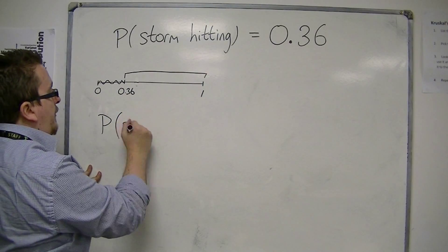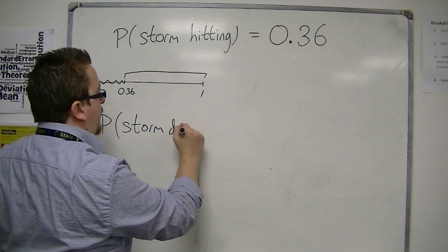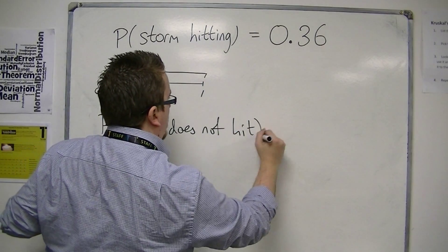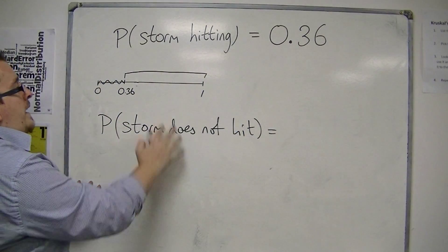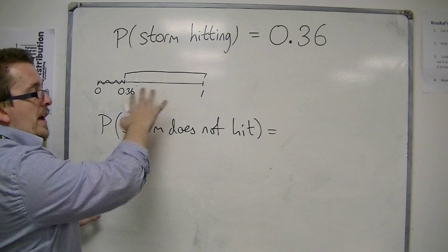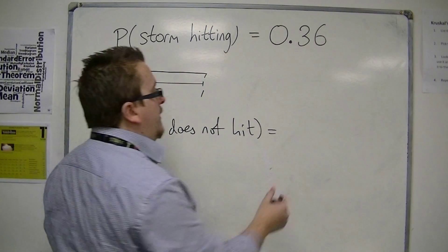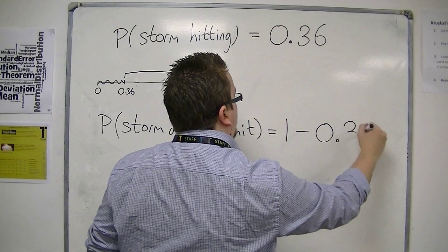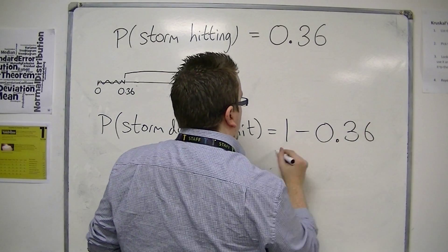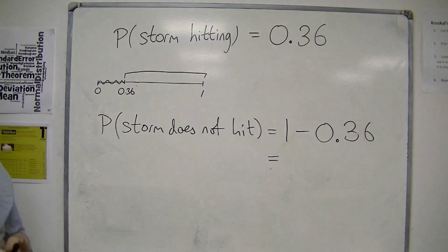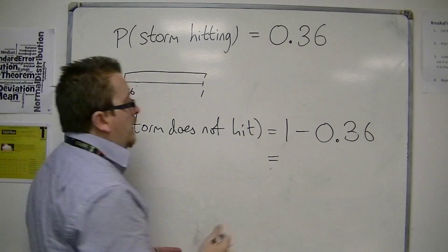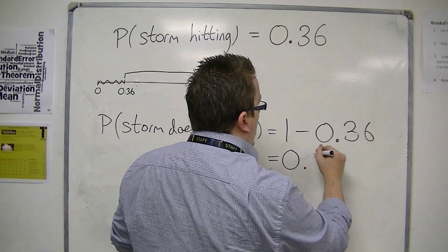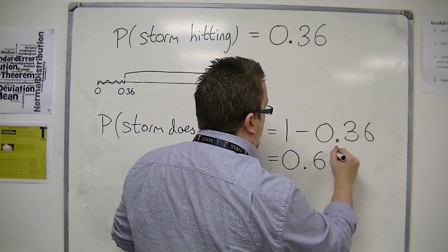The probability that the storm does not hit is the remaining gap, and this gap can be calculated by subtracting the probability from 1. So 1 take away 0.36, which will be 0.64.